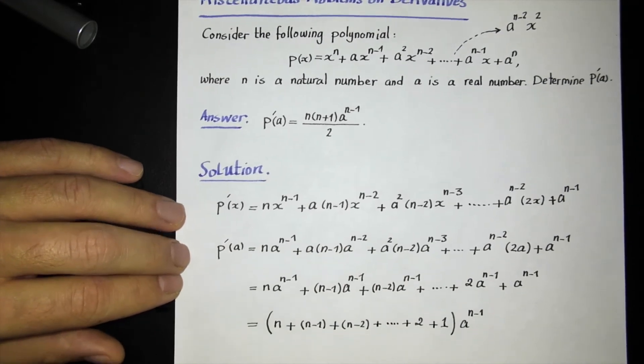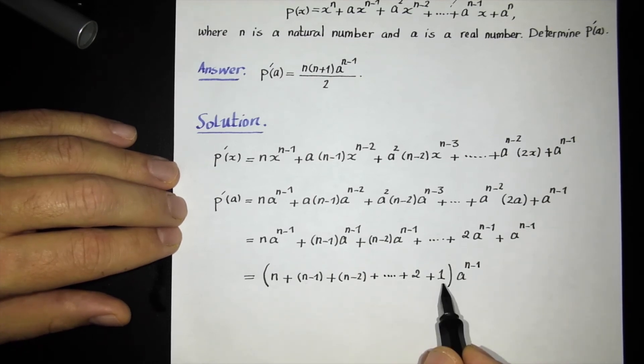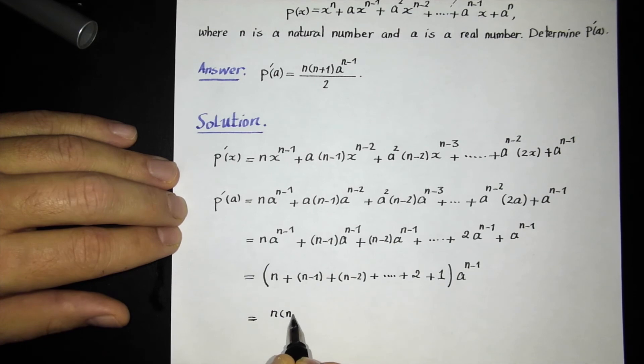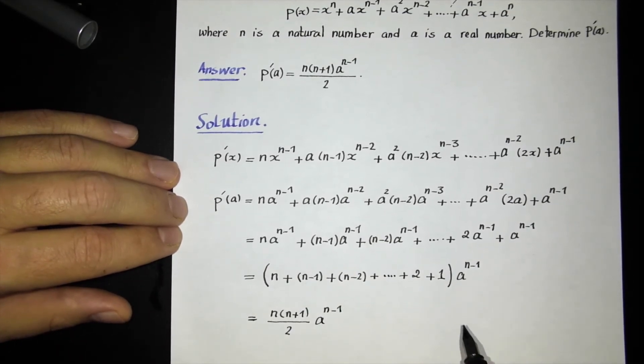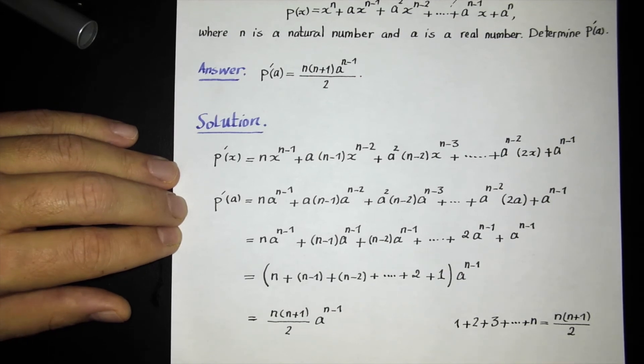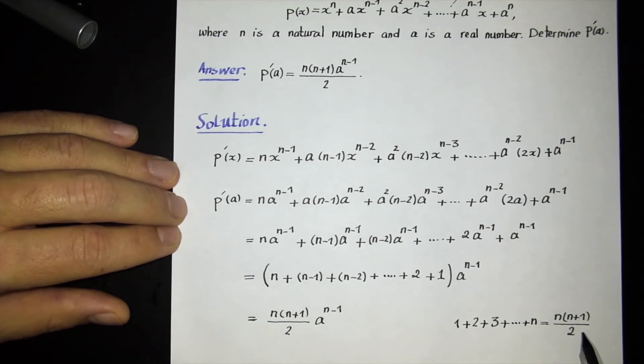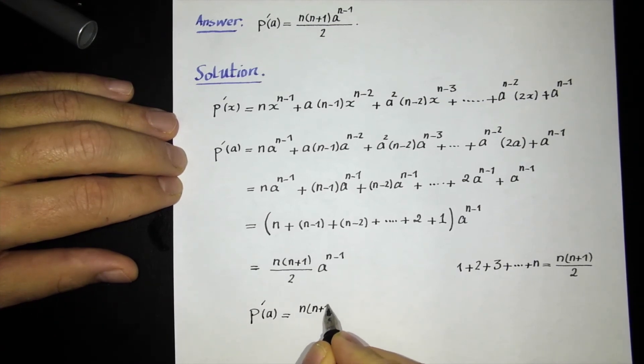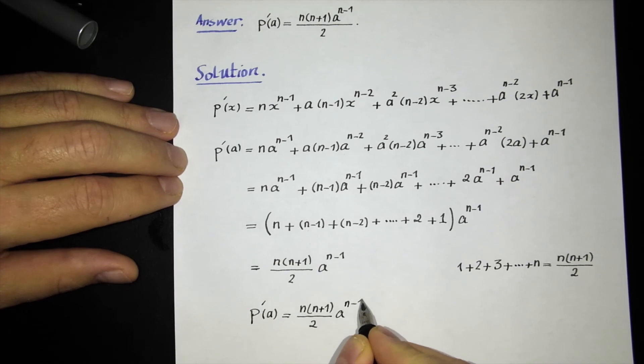Hopefully you remember your lessons from Math 1c. This is a very famous sum, the sum of the natural numbers from 1 up to n. And hopefully you remember this formula, that this becomes n times (n+1) divided by 2, and then a to the n minus 1. So I'm using this formula that if I add natural numbers from 1 up to n, the answer is n times (n+1) divided by 2. This is a very famous formula in mathematics. Actually, 1, 2, 3 up to n form an arithmetic progression, and this is the formula for Sn for this arithmetic progression. So it means that we were able finally to show that P'(a) is equal to n times (n+1) divided by 2, times a to the n minus 1.